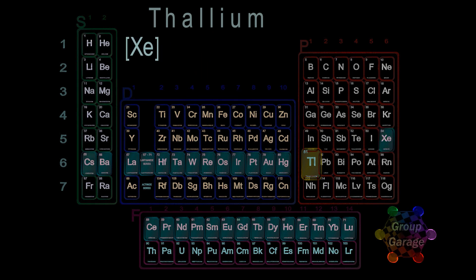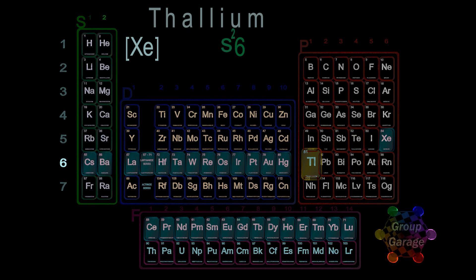In period 6, the two elements cesium and barium will each provide one electron and fill up the s-block. So we write the period number 6, followed by the number of electrons in the s-shell, s2.